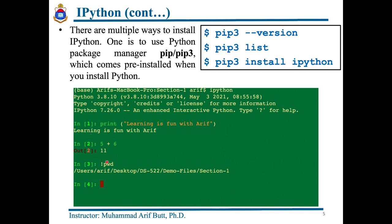Moreover, you can execute OS commands by preceding them with an exclamation sign as shown here. And last but not the least, IPython provides a lot of line and cell magic functions as well, which we will learn in the later part while discussing the Jupyter notebooks.